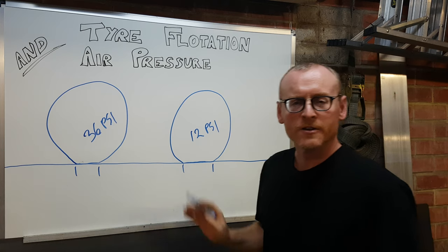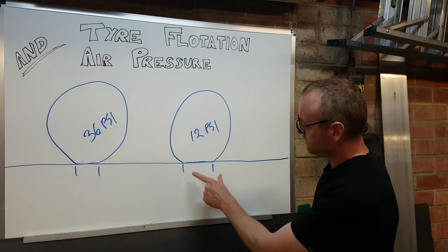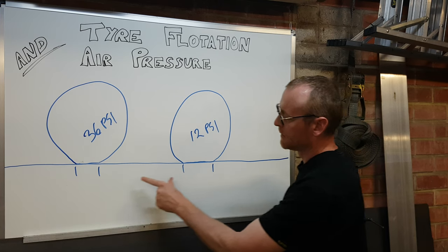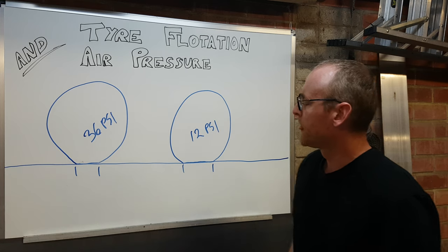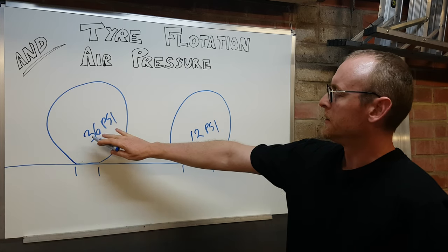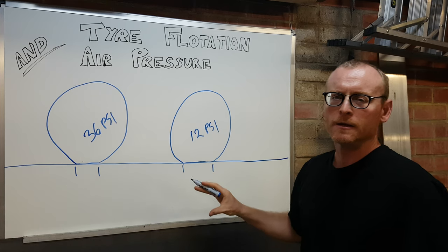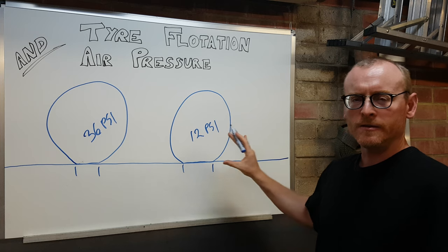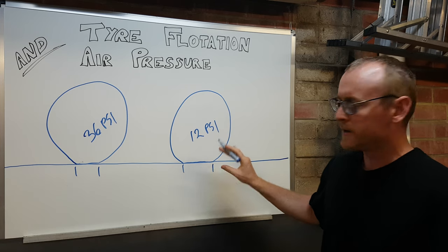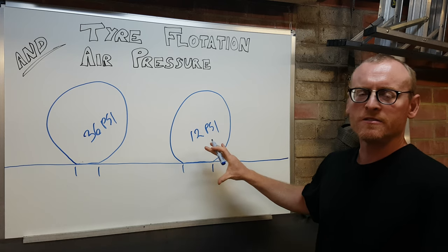This is a tyre at 12 psi. You'll notice that the contact patch, it's close to twice as long. And for a ratio of 3 to 1, this is one third the pressure, that's about right. If you third the pressure, you might get around about double the tread sitting on the ground and that massively increases the flotation.